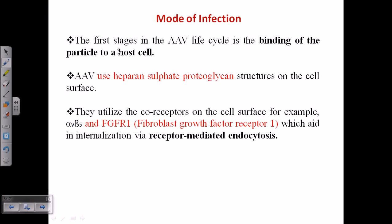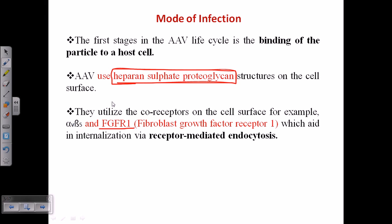The first stage of the AAV life cycle is binding of the viral particle to the host cell. This binding is achieved using heparan sulfate proteoglycans found on the surface of the host cell. A typical receptor is FGFR1 — fibroblast growth factor receptor 1 — which helps internalization via receptor-mediated endocytosis.